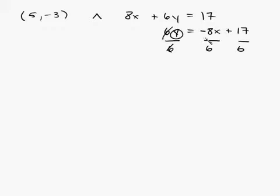Then divide by 6. And that isolates the y. And you get y is equal to, and you can simplify negative 8 6ths to negative 4 3rds by dividing by 2, top and bottom. Now x plus 17 6ths.